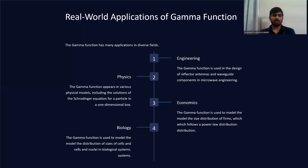In economic models, the gamma function has been used to describe utility functions and inter-temporal consumption. This represents the last major application of the gamma function.